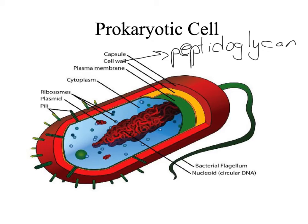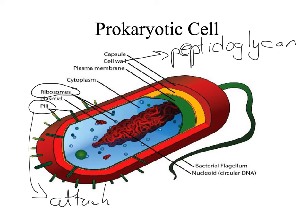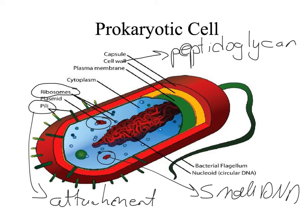There is cytoplasm inside the bacterial cell. The only organelle is the ribosome, which is responsible for protein synthesis. There are also structures called pili on the outside of prokaryotic cells. Pili are used for attachment — attachment of the bacteria to the medium or to other bacteria.